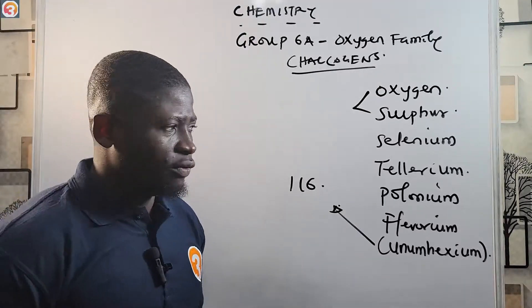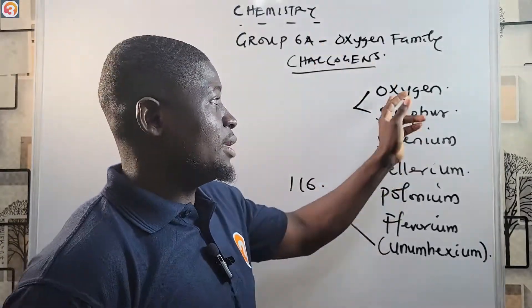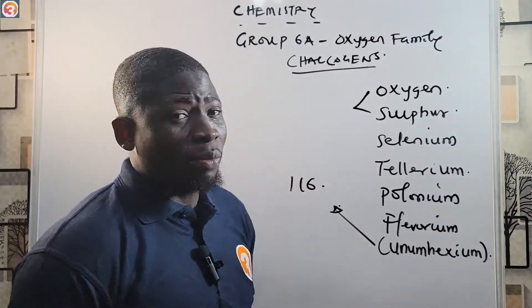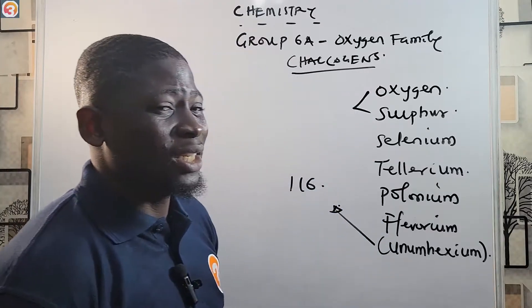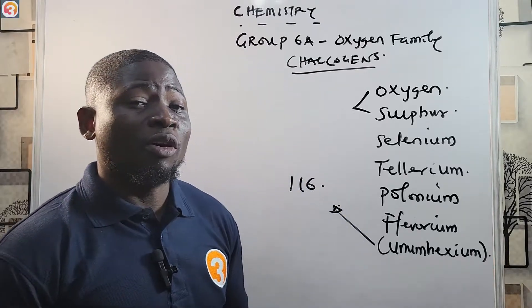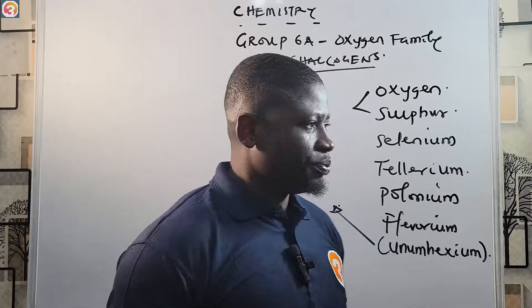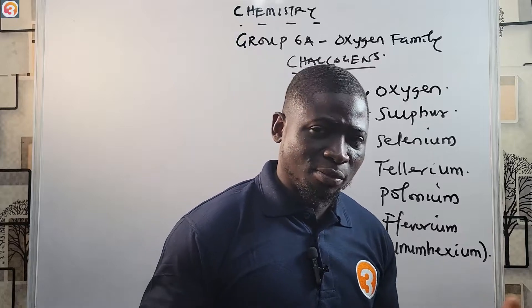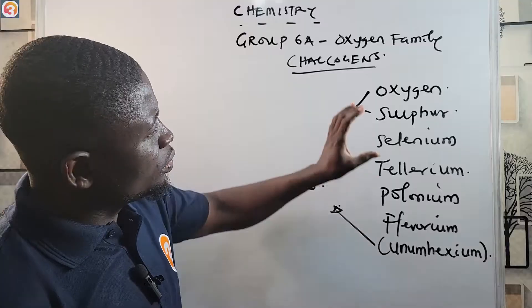Oxygen and sulfur are the most important members of the chalcogen family. Oxygen makes up 21% of the air we breathe. If the air were 100% oxygen, it would affect some vital organs in your system. Nitrogen makes up 78% of the air we breathe, oxygen makes up 21%, and there are some other gases as well — it's a mixture of gases.